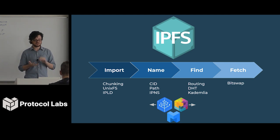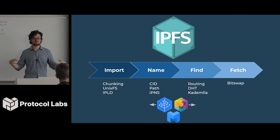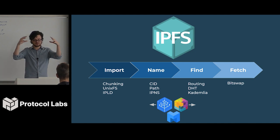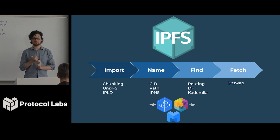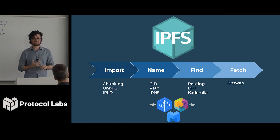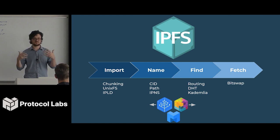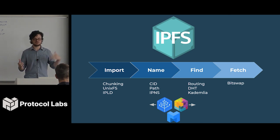When you're importing files, there are a bunch of steps. One is to chunk the file into smaller pieces. One is to take these pieces and compile them into files and directories. And finally, we encode these files and directory objects in a data structure system called IPLD. When naming files, we use CIDs — content IDs — to actually refer to pieces of data. We use paths to describe extra metadata about these CIDs. We also have a system called IPNS for mutable names.